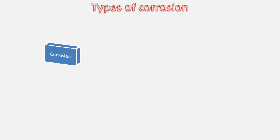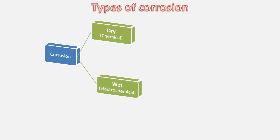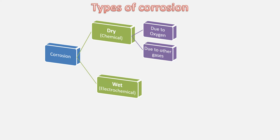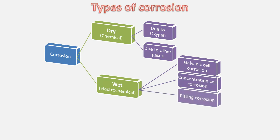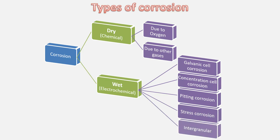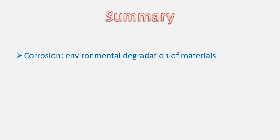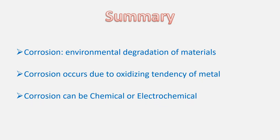Corrosion can be classified into two types: dry corrosion, also called chemical corrosion, and wet corrosion, also called electrochemical corrosion. Dry corrosion may be due to oxygen or due to some other gases. Wet or electrochemical corrosion includes galvanic cell corrosion, concentration cell corrosion, pitting corrosion, stress corrosion, or intergranular corrosion. So we have learned that corrosion is environmental degradation of metals, and it occurs due to the oxidizing tendency of metals, and can be chemical or electrochemical.